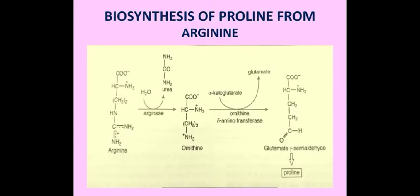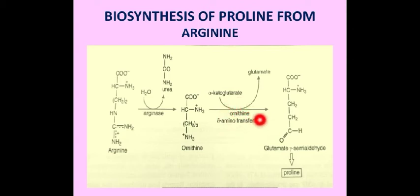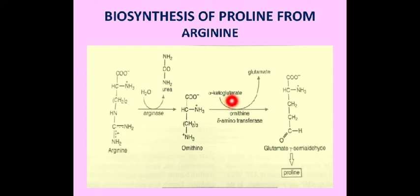Biosynthesis of proline from arginine. Proline also gets synthesized from arginine obtained through the diet. The enzyme arginase converts arginine to ornithine and urea. Ornithine is then converted to glutamate-gamma-semialdehyde, catalyzed by the enzyme ornithine delta-aminotransferase, which removes the amino group from the side chain and oxidizes it to the aldehyde. The receptor of the amino group is alpha-ketoglutarate, which is converted to glutamate.